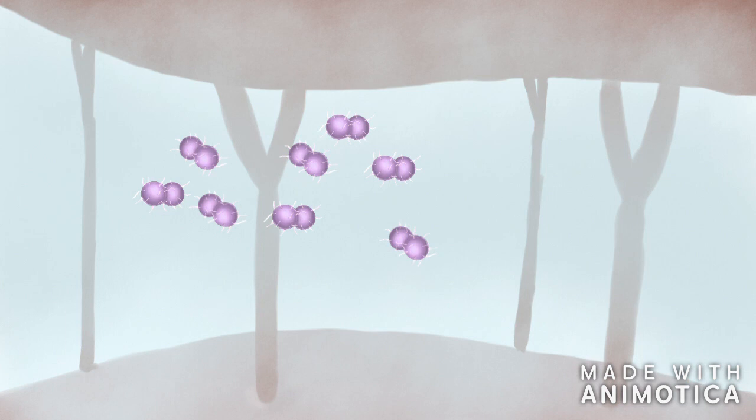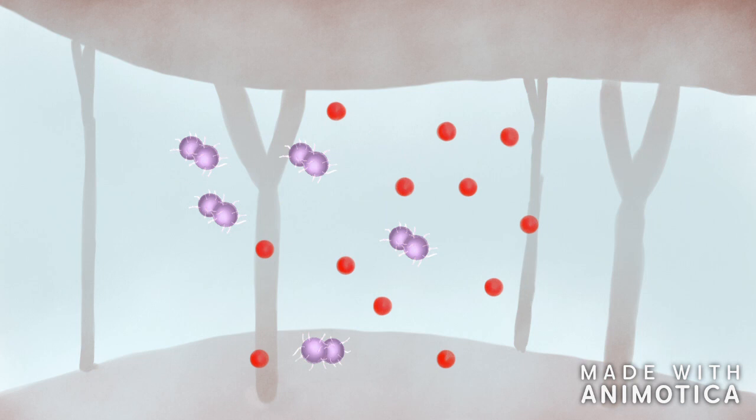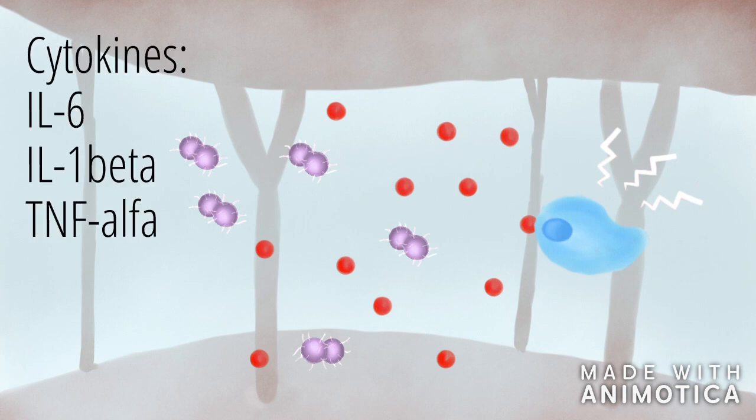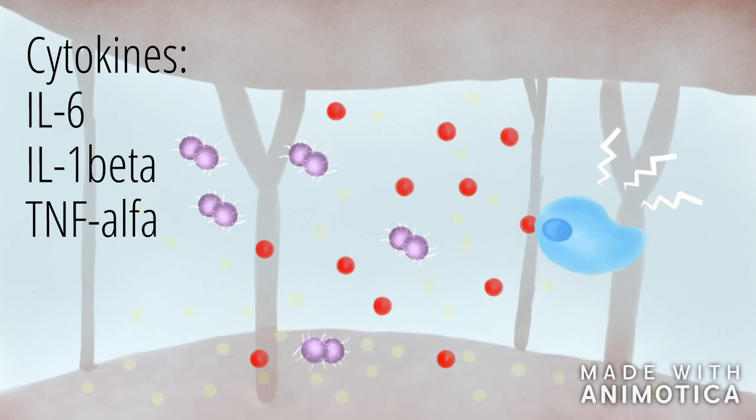Next, the interaction of bacterial components with the meningeal cells initiates the production of cytokines. Cytokines are proteins to activate immune cells, which starts an immune response, thus inflammation. The cytokines involved in leptomeningitis are IL-6, IL-1-beta, and TNF-alpha. Research has shown that the meningeal cells produce a large amount of IL-6 cytokines. This production is mostly stimulated through the binding of pili to the meningeal cells.